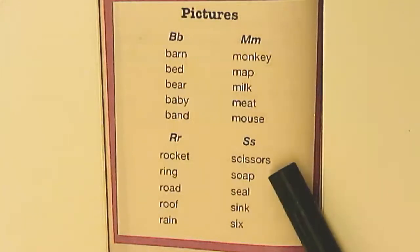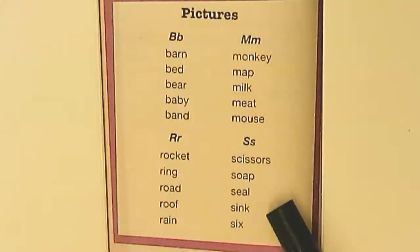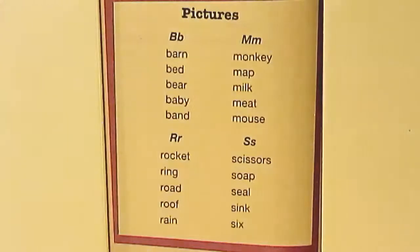For S, we have scissors, soap, seal, sink, and six. And that is your first sort for our new book.